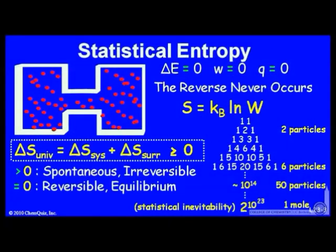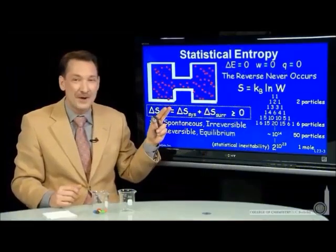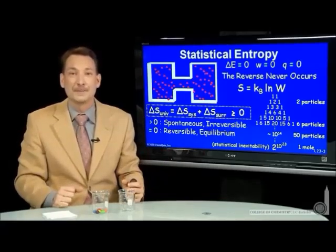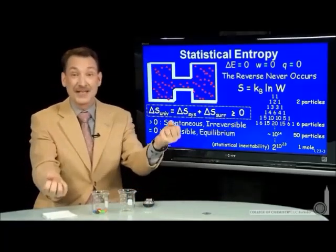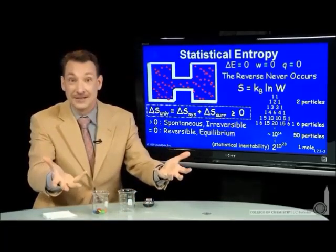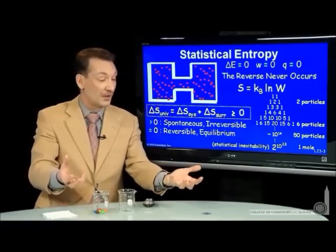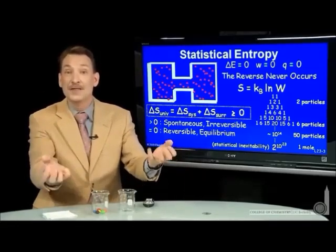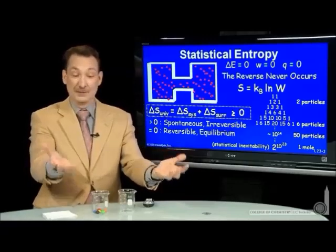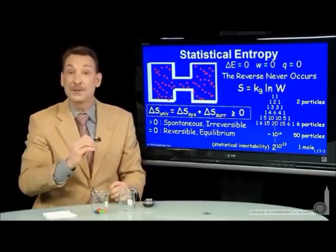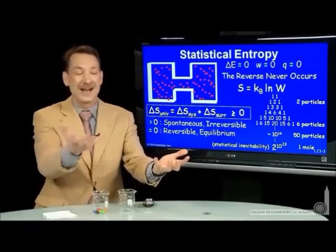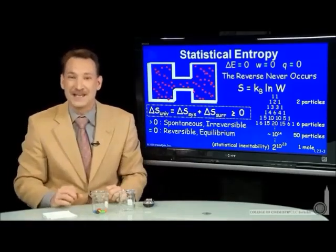We can have processes that occur with no entropy change in the universe — where the system and surroundings just balance each other out. That would mean each side of a chemical reaction is equally likely: no entropy penalty for being a reactant or a product. Going between the two, there's no entropy change of the universe, so it's equally likely to be on either side. That's the definition of equilibrium. If it's equally likely to be here or here, with no energy penalty, I'll switch between the two freely — I'll be at equilibrium.